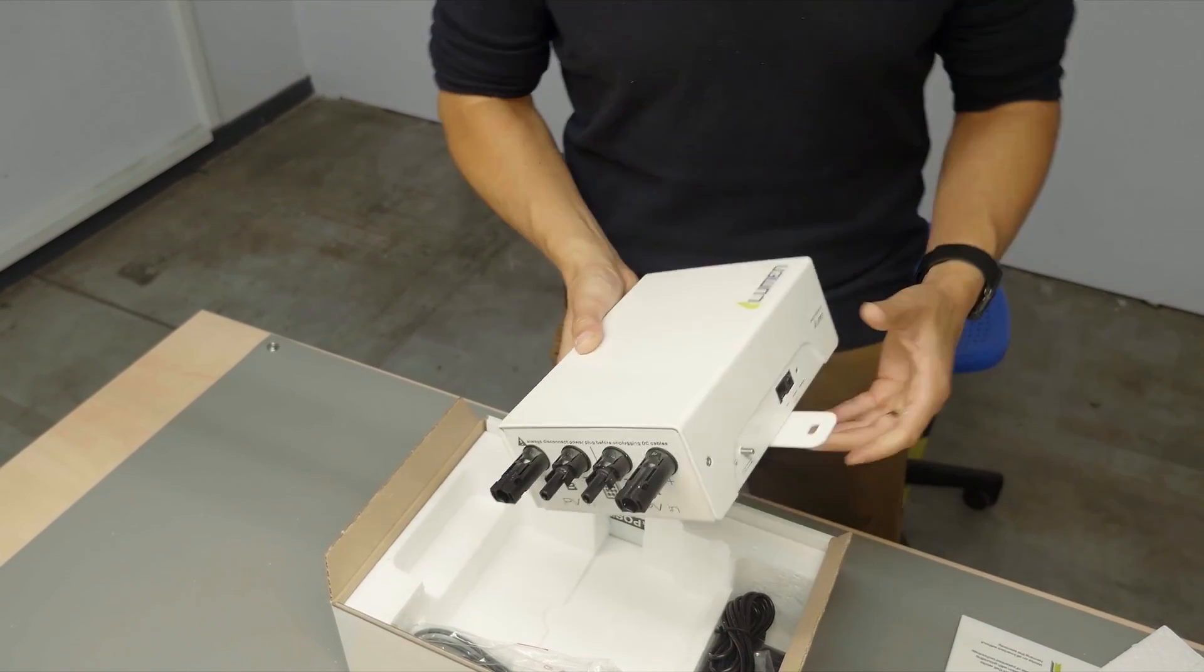We see clear indications showing which side connects to the inverter and which to the photovoltaic side. You can also see that you must always disconnect the power before unplugging the DC cables, which is also clearly mentioned in the installation manual.